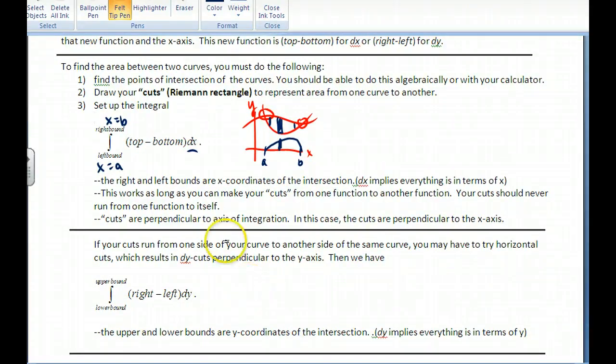Now, also sometimes what happens is that your cuts should run from one function to another. If they run from one function to itself, you might want to try doing the cuts in a horizontal manner. And so when you do it in a horizontal manner, everything will be dy. Going back up to this one, when I do this cut, I call this delta x. And then if I have something like this, and I'm looking at this area right in here, where if I do that, and I do a vertical cut, I go from one curve to another curve, but over here I go from one curve to itself.